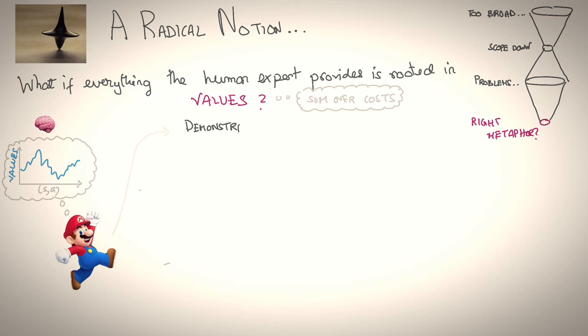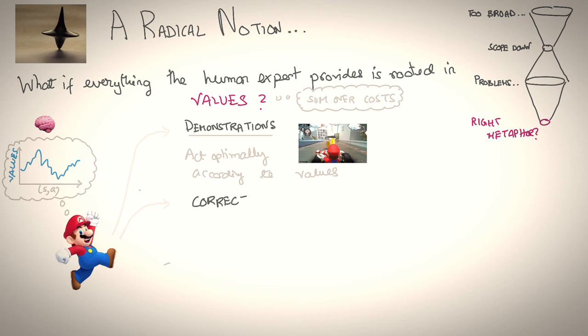Instead, Mario shows us demonstrations. For example, Mario acts optimally according to their values. They also show us corrections. For example, when things go wrong, when we are off the track, how should we recover optimally? And that says something about Mario's values.